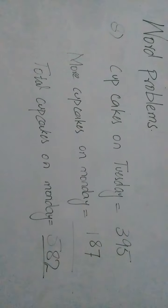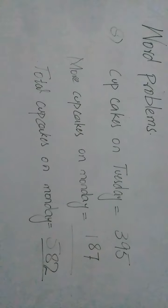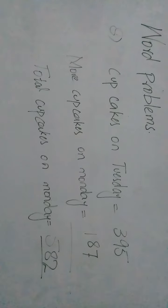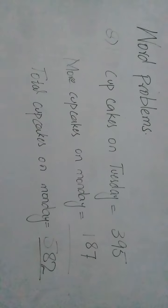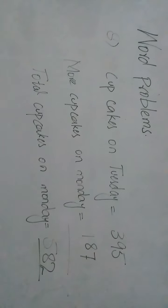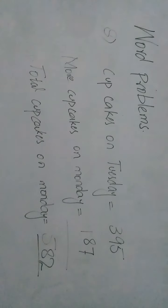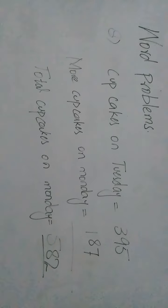Now let's see the solution. Cupcakes on Tuesday equals 395. Since she sold 187 more cupcakes than Tuesday, you have to make the sum of both numbers: 395 + 187 = 582. That means she sold 582 cupcakes on Monday.